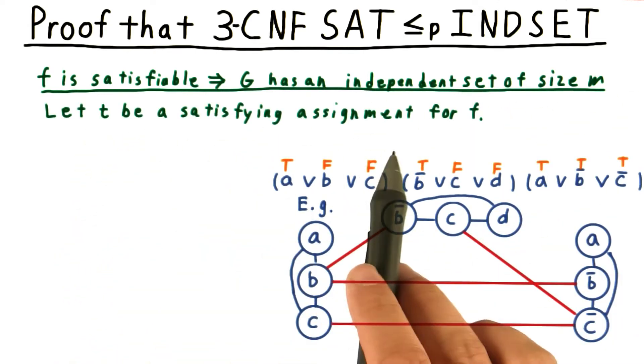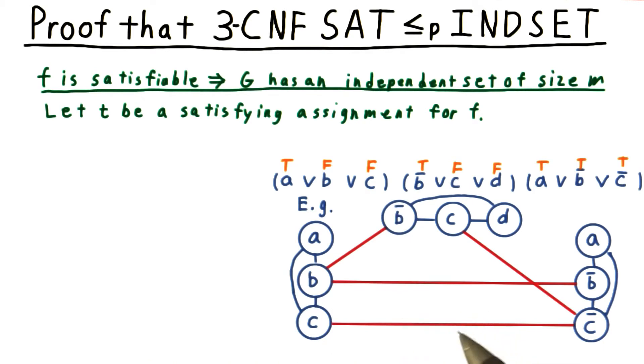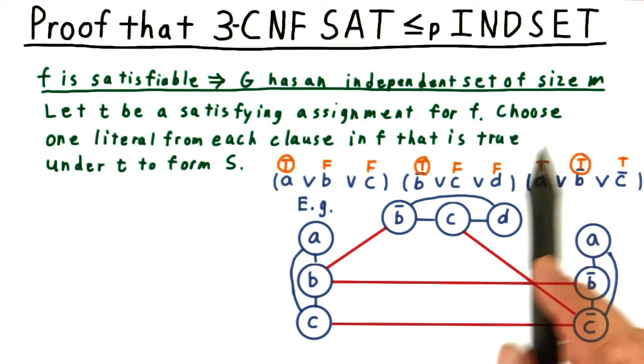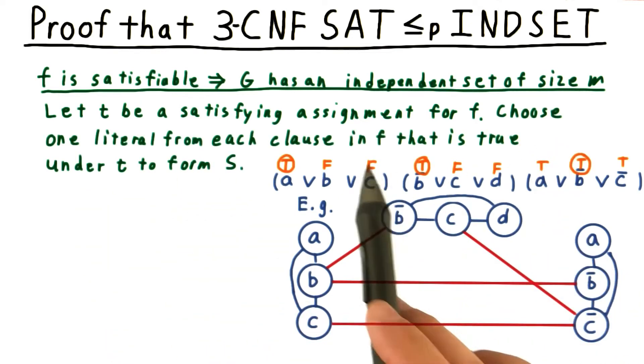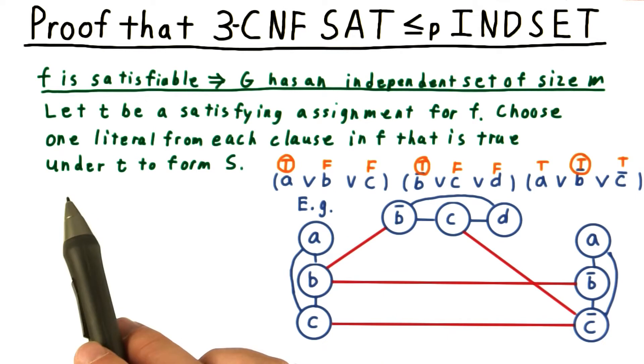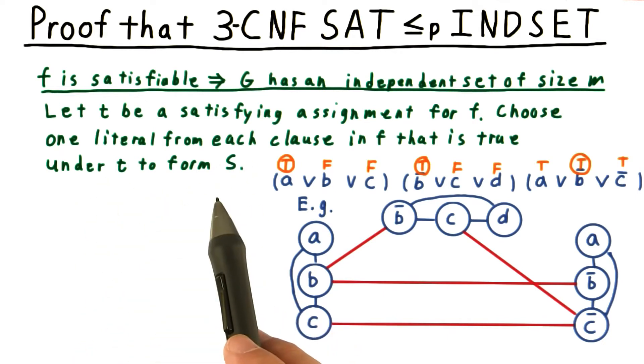We'll let T be a satisfying assignment for F. In our example, let's take the one that makes A true, B false, C false, and D false, and we'll set the complements accordingly. Then, we choose one literal from each clause in our original formula that is true under the truth assignment, and this will form our set S.